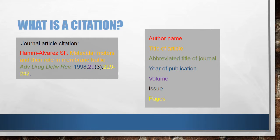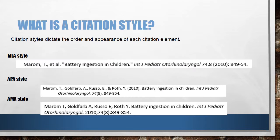A citation also includes the title of the journal, the year of publication, and the volume, issue, and page numbers of the journal in which the article appears. A book citation or a website citation provides similar information about a book or a website. Citation elements can be placed in different orders, and a citation style tells you in which order to place these elements.